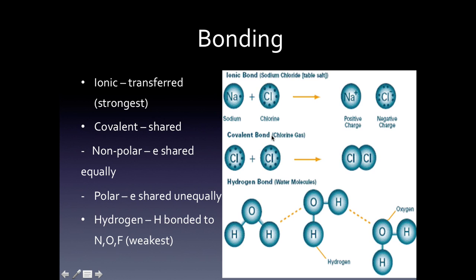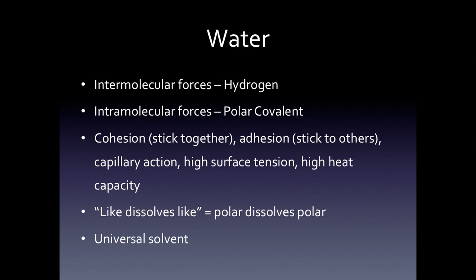Covalent bonds involve electrons being shared rather than transferred. Chlorine gas is an example — two chlorines come together and electrons are shared. There are two types of covalent bonds: nonpolar, where electrons are shared equally, and polar, where electrons are shared unequally. The last type is hydrogen bonding, where hydrogens are bonded to extremely electronegative elements — mainly nitrogen, oxygen, or fluorine (NOF).